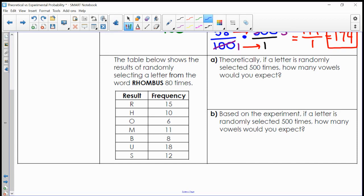Let's do one more example comparing theoretical versus experimental probability. In this table below, it shows the results of randomly selecting a letter from the word rhombus 80 times. Notice in this experiment, I would randomly select the letter R 15 times, the letter H 10 times, the letter O 6 times, the letter M 11 times, the letter B 8 times, the letter U 18 times, and the letter S 12 times. Now that we have this set up for the problem, let's talk about this theoretical question.